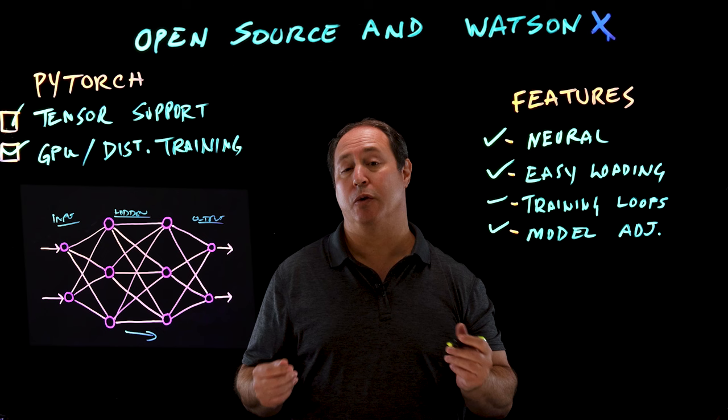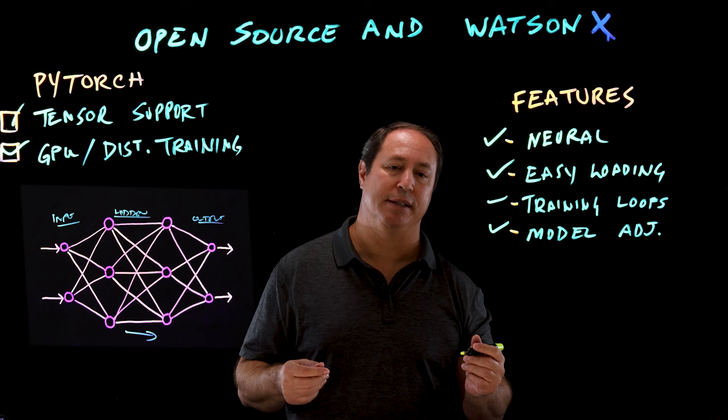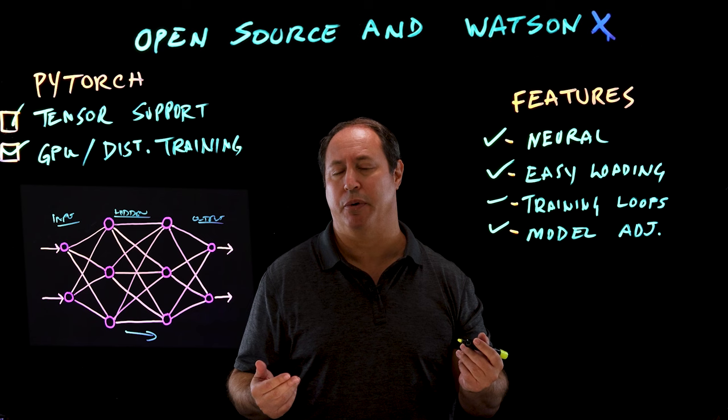Finally, PyTorch also provides built-in model adjustments. The key one is the auto-gradient calculation. Think back to your calculus days — when you're calculating gradients, having that feature built in makes the minor tweaks to the model that improve it and get it over time to be a better predictor. This is what PyTorch provides.